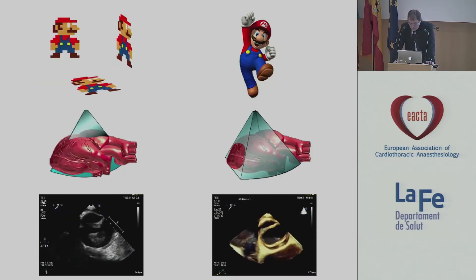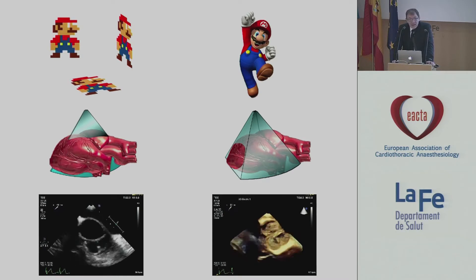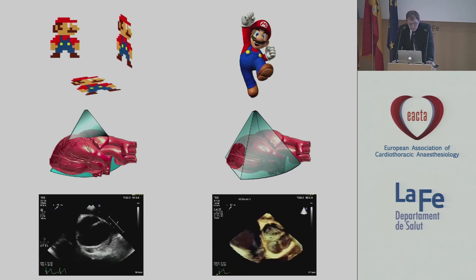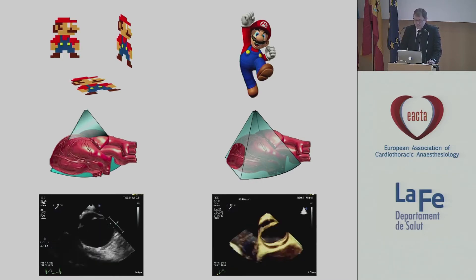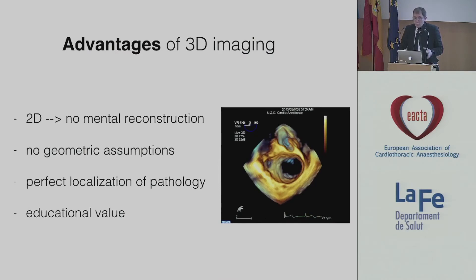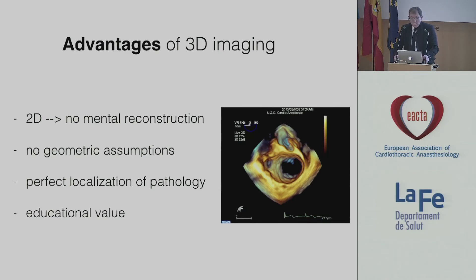Three-dimensional echocardiography, on the other hand, increases the accuracy of interpretations by facilitating spatial orientation and the relationship with the surrounding structures. This also facilitates the communication between the echocardiographist and, for example, the surgeon. Some advantages of three-dimensional imaging are: there is no need for mental reconstruction, there are no geometric assumptions, there is a perfect localization of the pathology, and it has educational value.